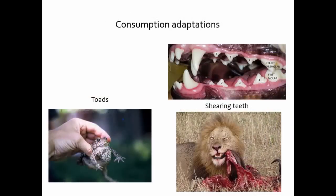If you're a predator, the next step is to consume the prey — get it into your gut. You've handled it, now you have to turn it into food. Toads can puff themselves up, which is thought to prevent predators from consuming them — though this only works until the toad dies. Predators like lions have shearing carnassial teeth — the fourth premolar and first molar shear together like scissors, slicing off pieces of meat that can be swallowed. These are consumption adaptations that many mammalian predators have.